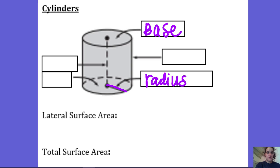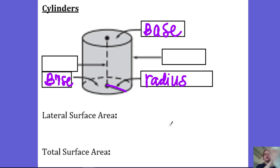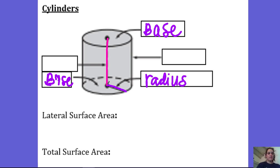So this is also a base. The bases are circles, so that means your lateral surface area is rounded — it's that curved, rounded part of the cylinder. The height is what connects your two bases. It goes from the center of the top base to the center of the bottom base, and it's perpendicular to your two bases.